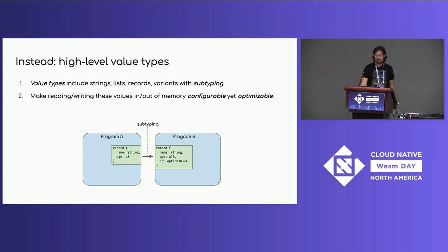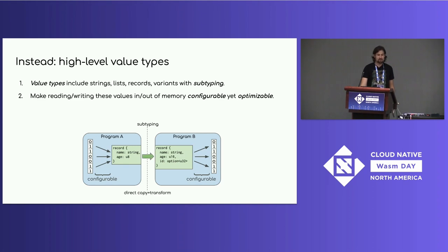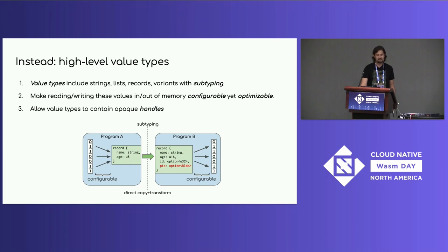We make reading and writing these values in and out of linear memory configurable yet optimizable. Program A gets to specify how bits turn into the abstract record — for example, choosing the string encoding, UTF-8 or UTF-16 — and program B makes the opposite decision. Because an AOT compiler can see how these things are configured, it can compile this down to a direct copy-and-transform directly from A's linear memory into B's linear memory. Lastly, we allow value types to contain opaque handles — for example, program B can accept a picture field via a handle to a blob, passing just a handle rather than copying the blob contents.